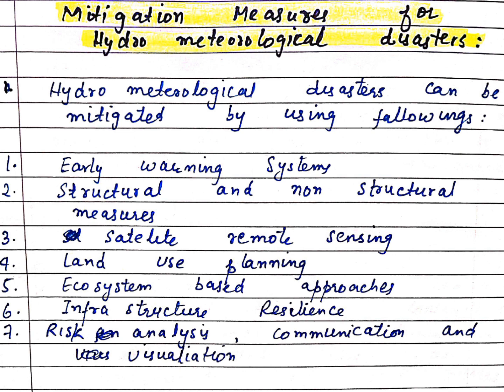So these were some mitigation measures for meteorological disasters. We learned what hydrometeorological disasters are, what their impacts are, and how we can reduce those impacts. In the next video, we will discuss specific meteorological disasters like floods, droughts, and cyclones. If you want to watch more videos, please check this channel's playlist. Thank you so much for watching the video.